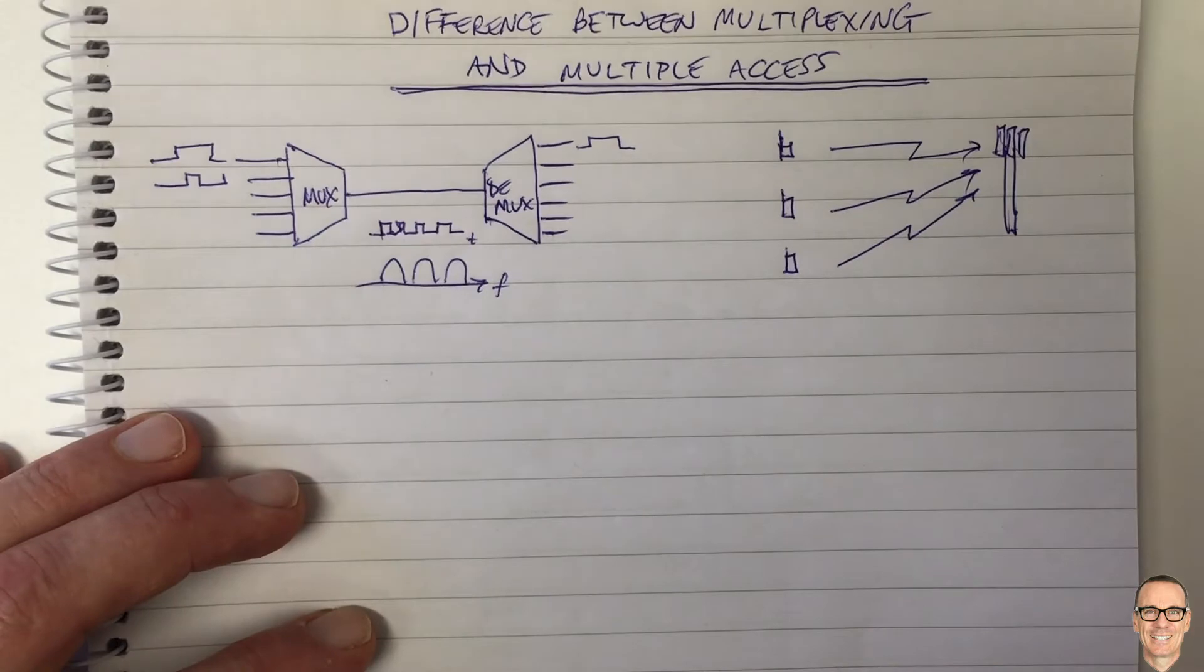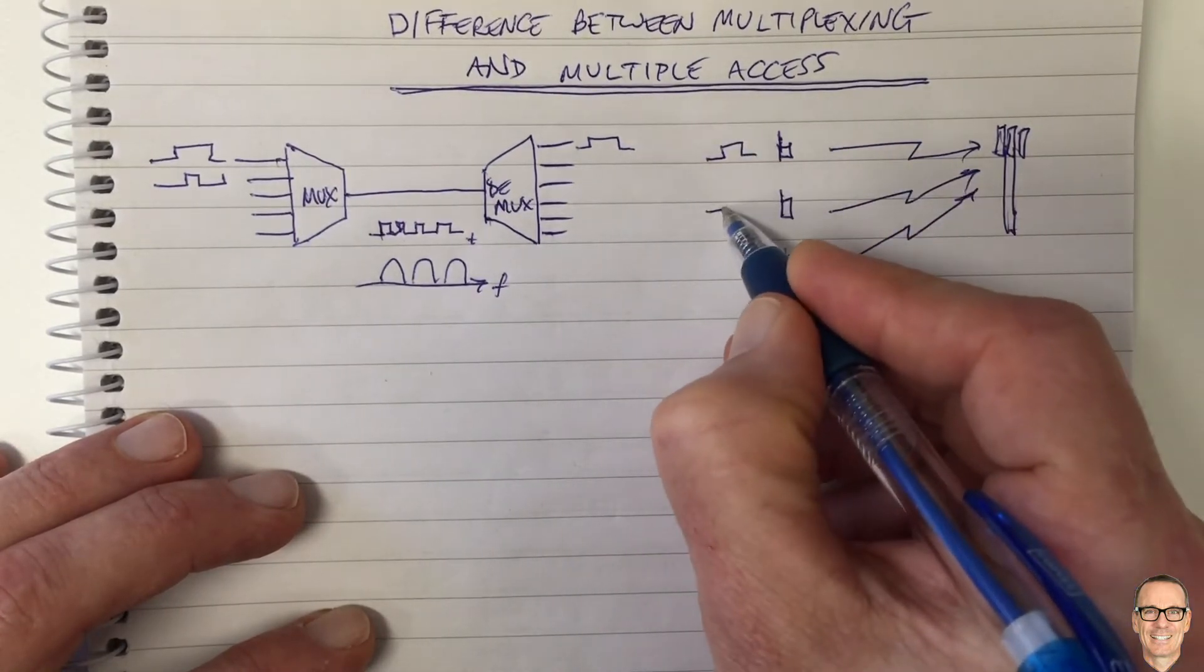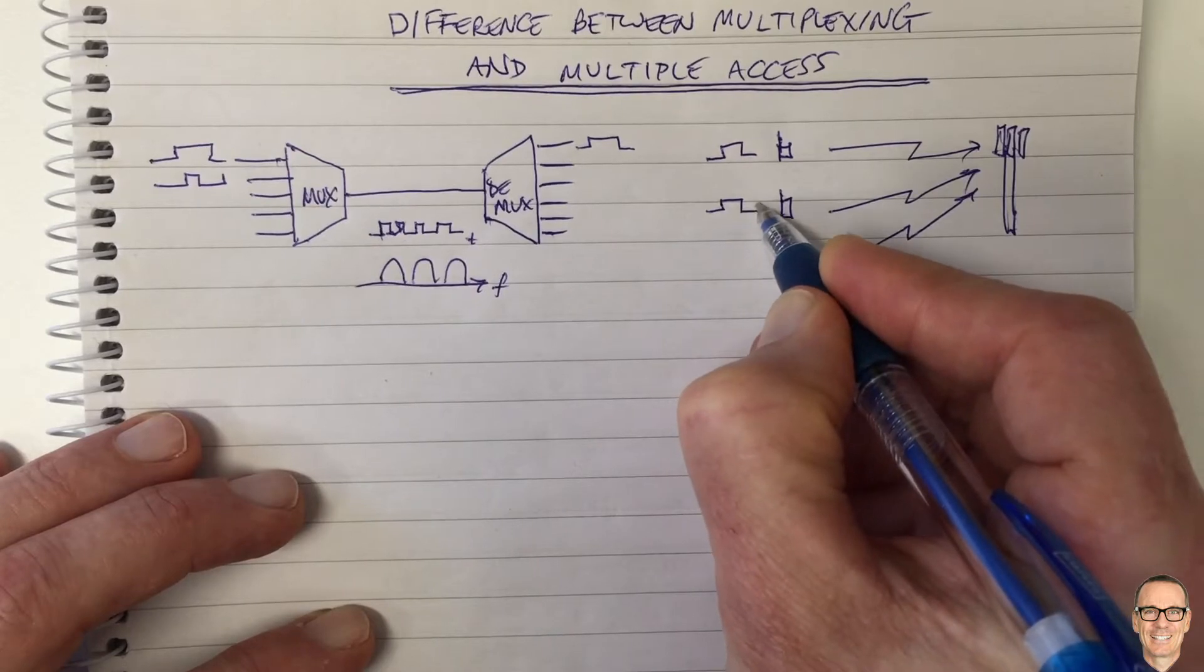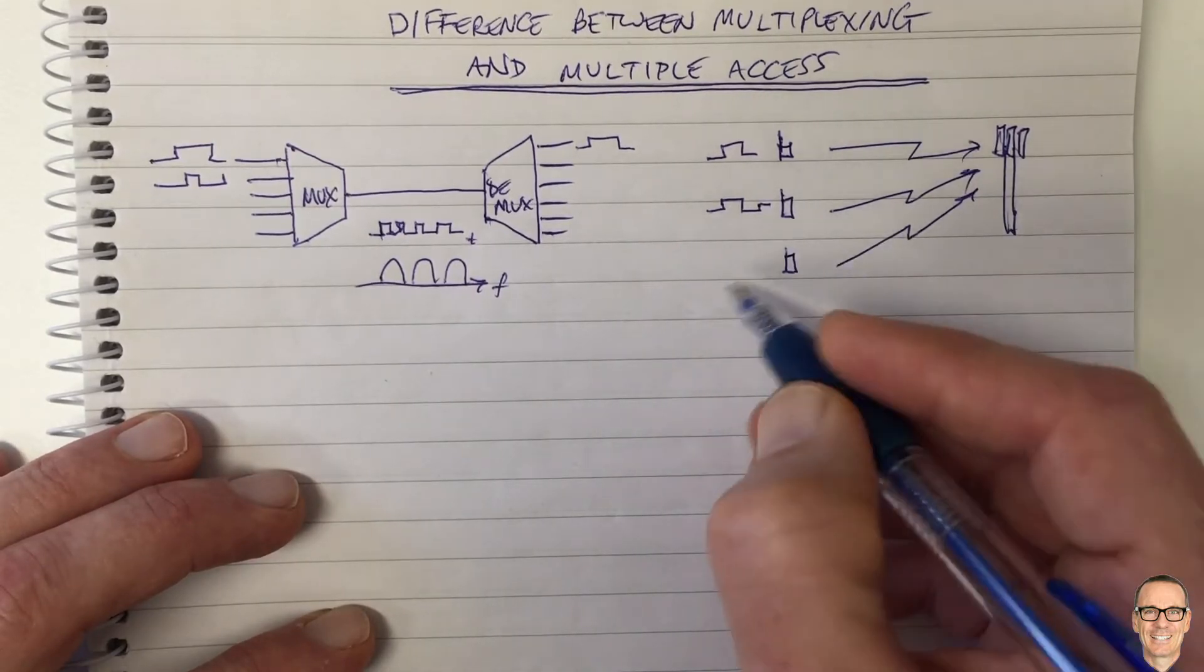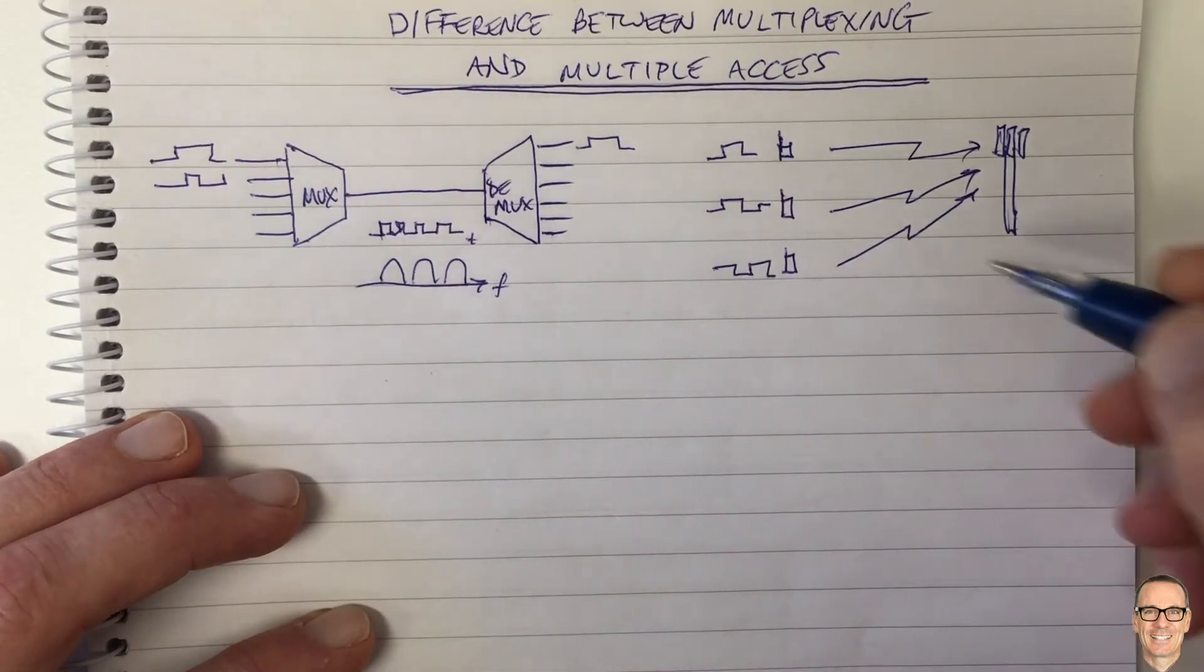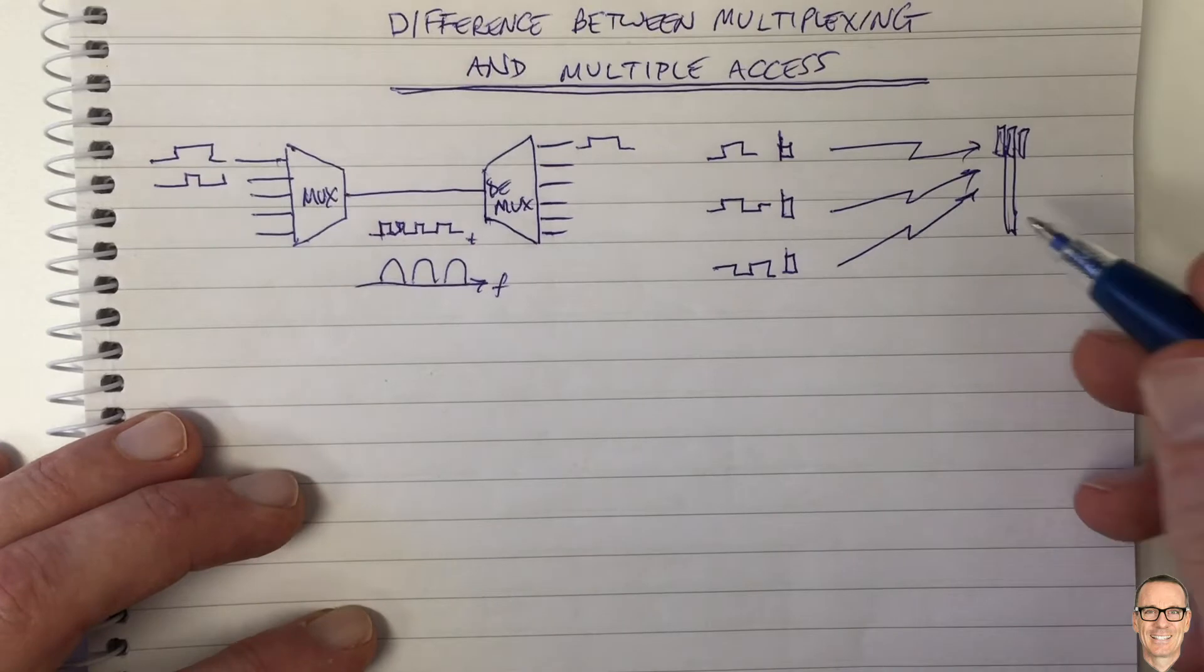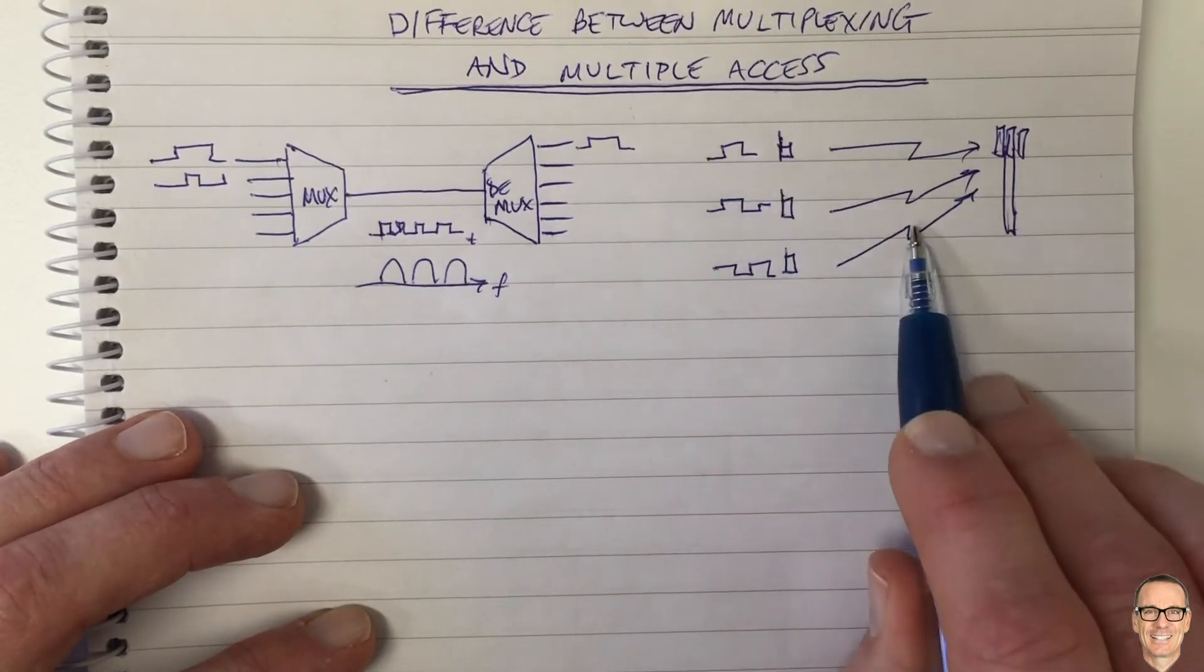And so what happens here is the same thing. These are low rate signals in comparison to the bandwidth of the channel if we're going to get them all through. And the difference being here that we don't coordinate. It's not so easy to coordinate all these users on the multiple access channel.